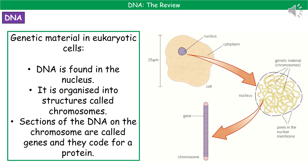Welcome to our review on DNA. As we've already seen in our earlier video, when we're talking about eukaryotic cells, all of that genetic material is found inside the nucleus. What we actually have inside the nucleus of eukaryotic cells is this stuff called DNA, or deoxyribonucleic acid.